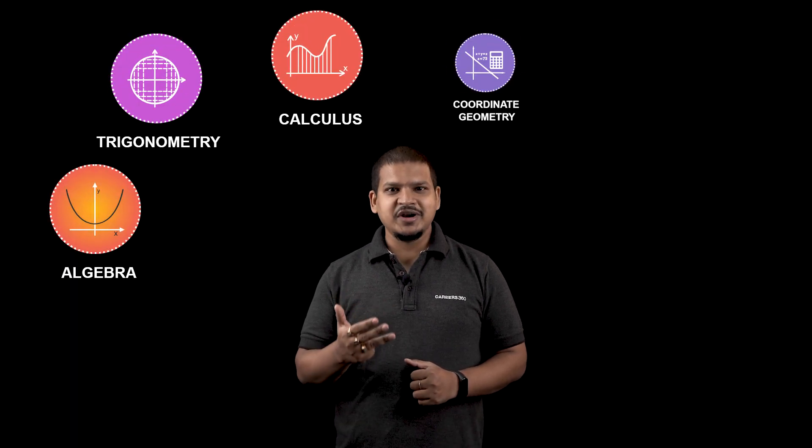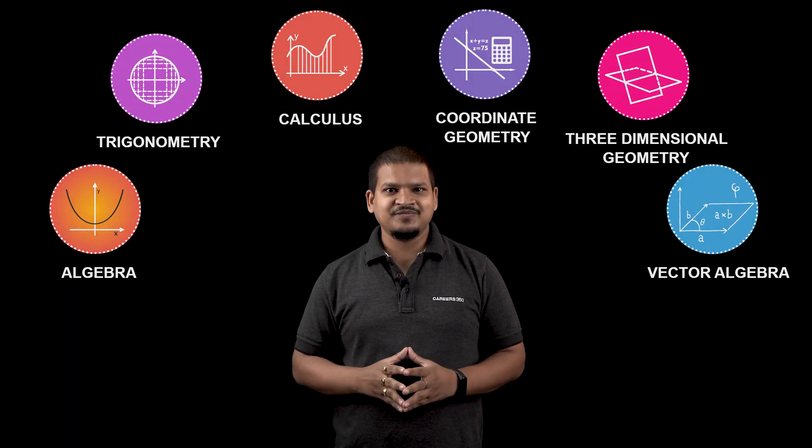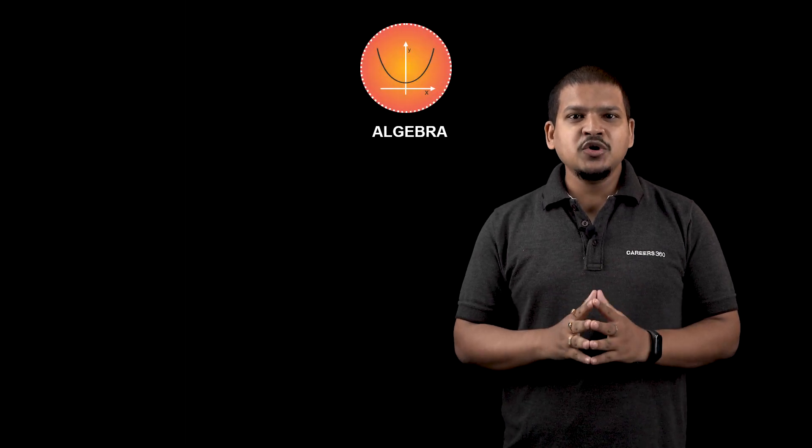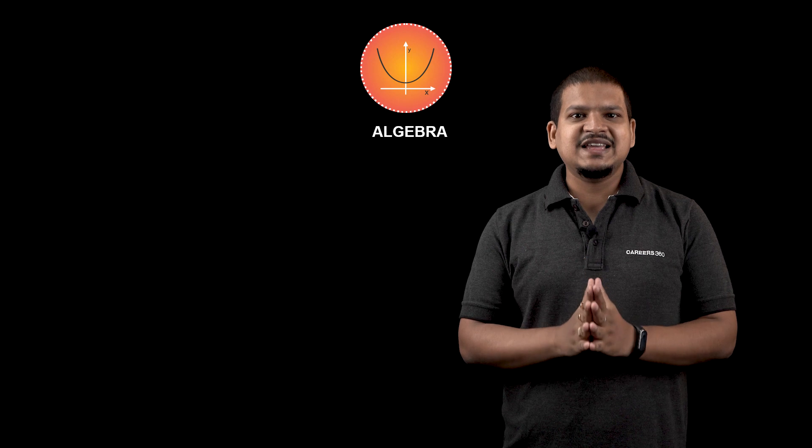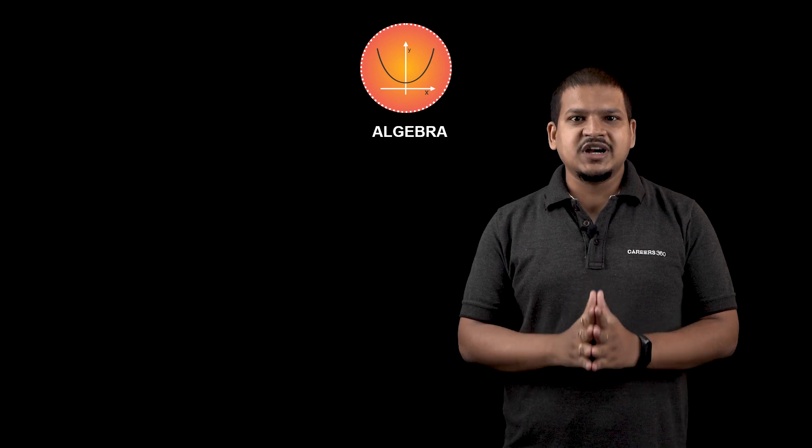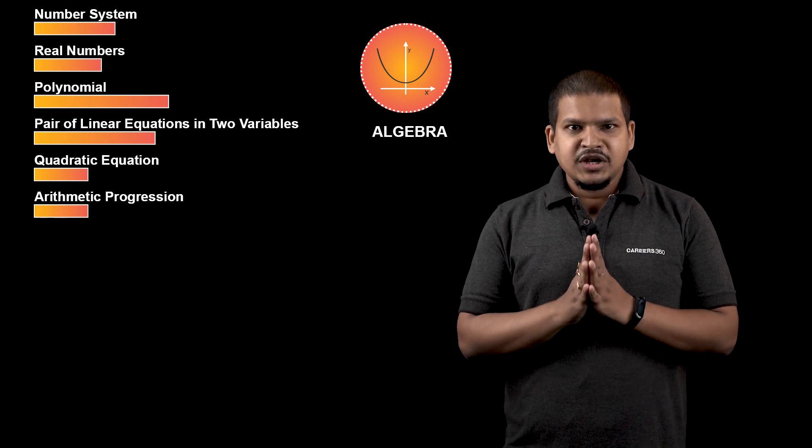The pedagogy that we have followed in physics and chemistry will be followed for mathematics as well. For preparation of JEE Main mathematics, you need to majorly prepare for six units: algebra, trigonometry, calculus, coordinate, 3D, and vector. Now let's take the example of algebra only. In order to prepare algebra from class 9th and 10th, you need to study these chapters.